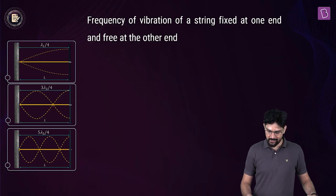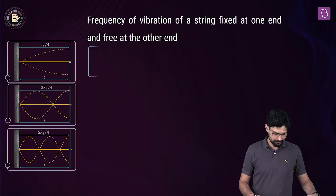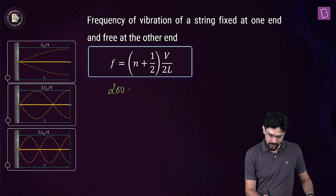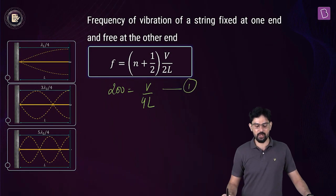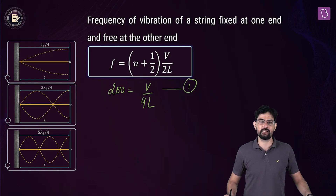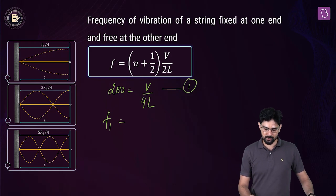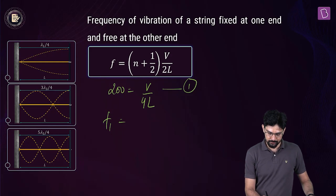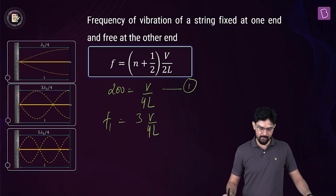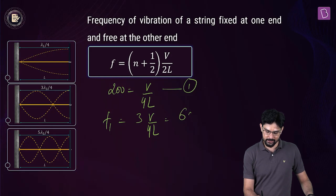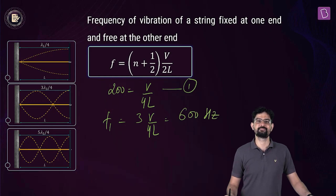The fundamental frequency is 200 Hz, so V/(4L) = 200. For N = 1, the first overtone F1 = (3/2) × V/(2L) = 3V/(4L) = 3 × 200 = 600 Hz. For N = 2, the second overtone = 5V/(4L) = 5 × 200 = 1000 Hz.